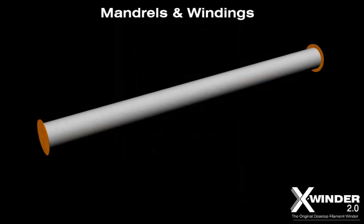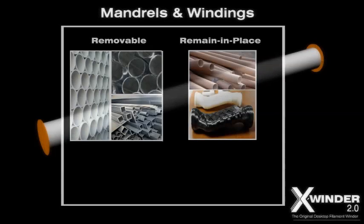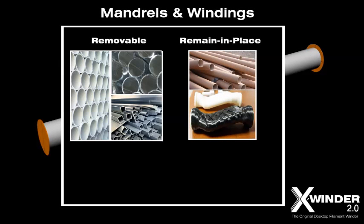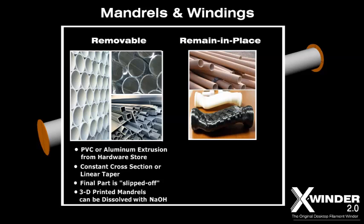The X-Winder can build from two types of mandrels: removable or remain-in-place. Mandrels are not provided with the X-Winder kit. Removable mandrels can be purchased at the local hardware store; PVC or aluminum extruded parts are recommended. Removable mandrels can have a constant convex cross section or can have a linear taper from one end to the other. The final cured part is slipped off and removed from the mandrel after curing.